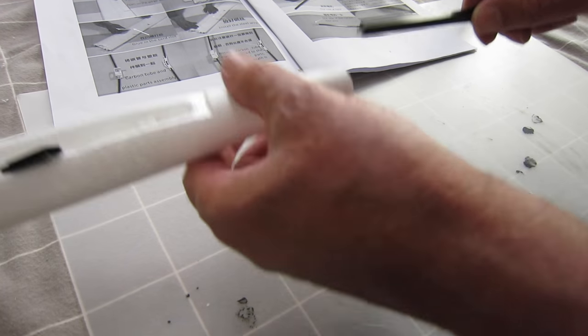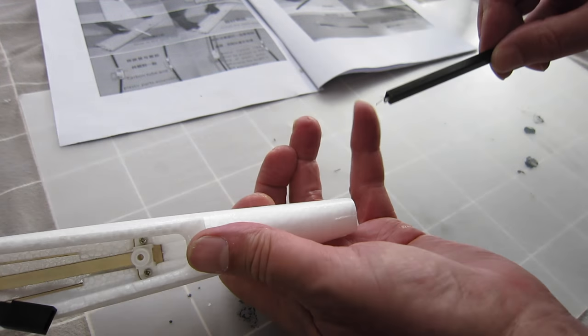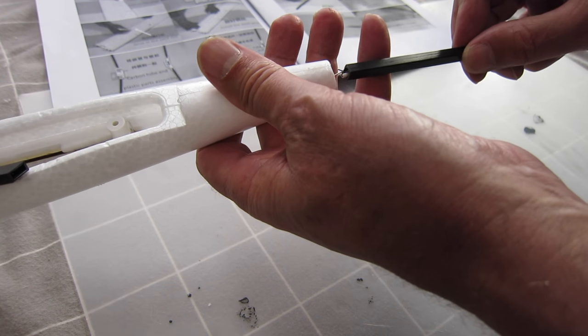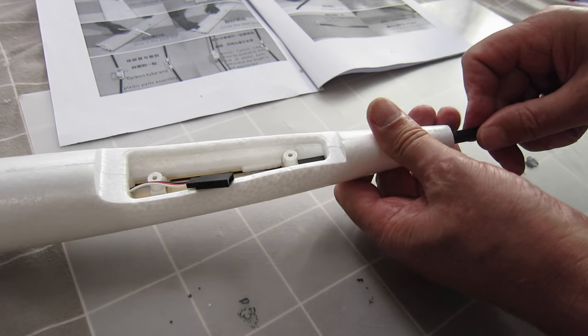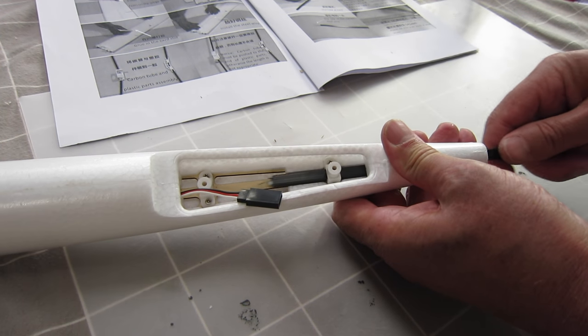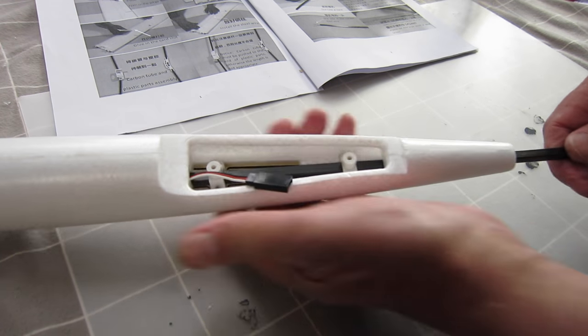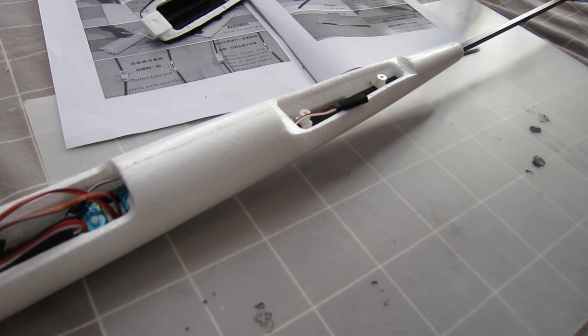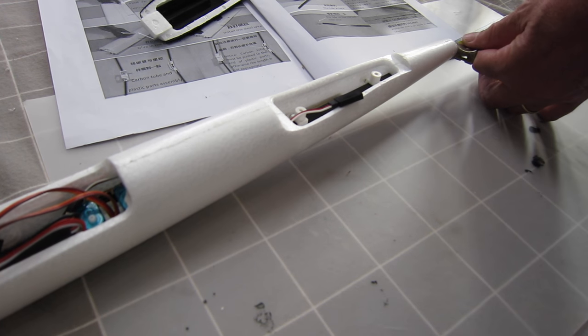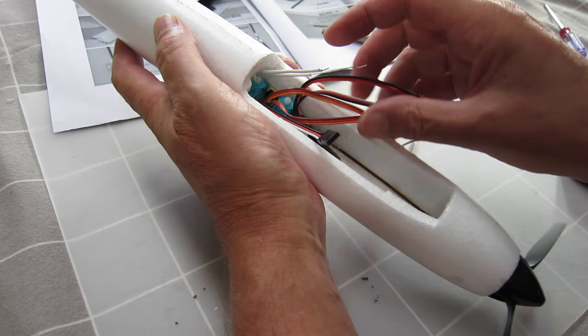So now I'm fitting the tail boom into the fuselage, there's the Z-bends there. That looks like that's going to fit alright. Go right up forward, it says the length should be 541.